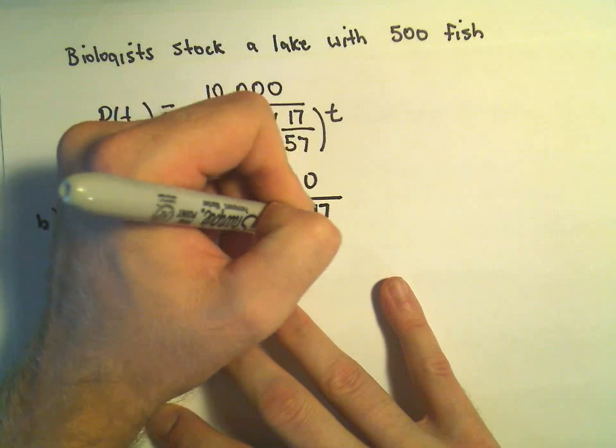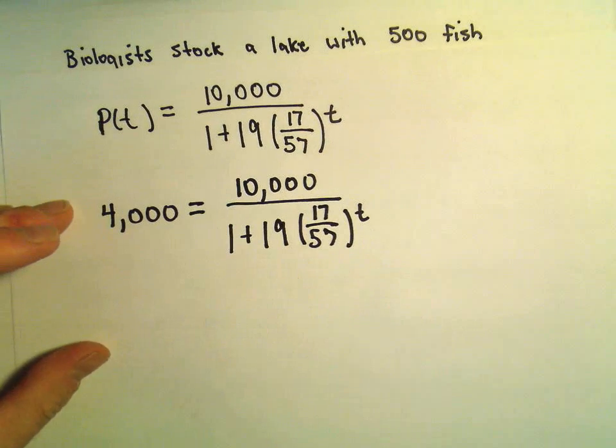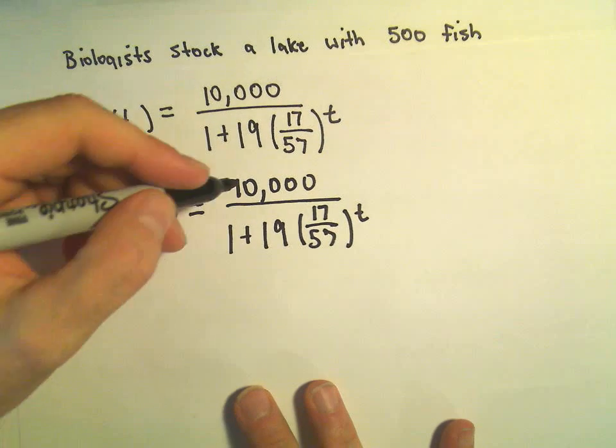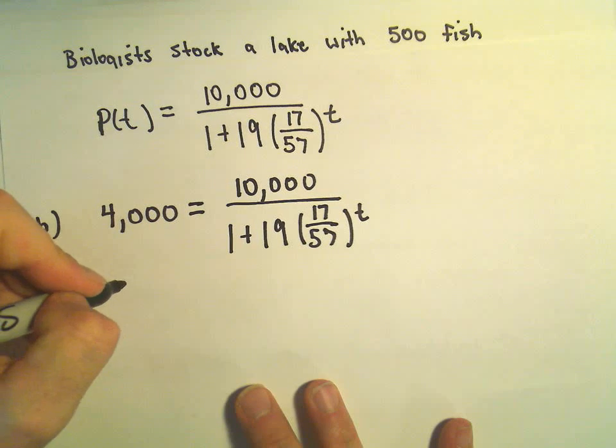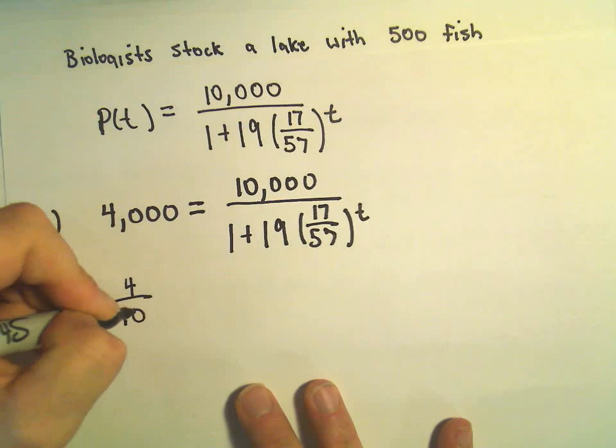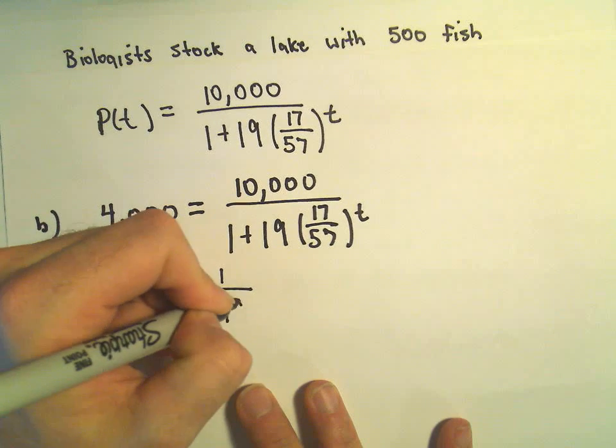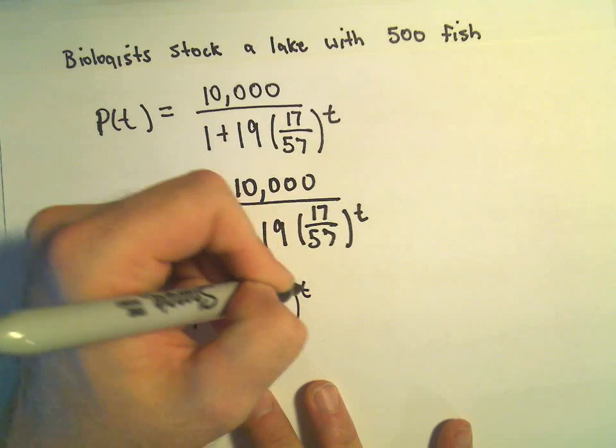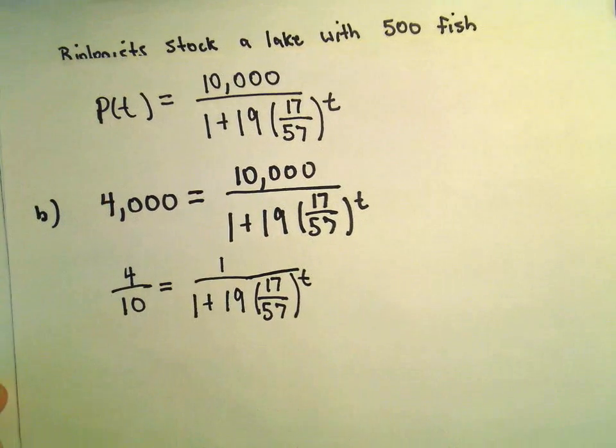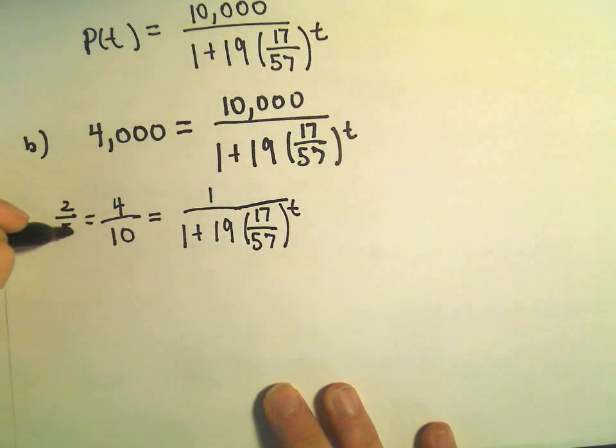So just a little bit of algebra at this point. I'm going to divide both sides by 10,000. So 4,000 over 10,000 will give us 4 tenths. And then we have 1 over 1 plus 19, 17 over 57 raised to the t power. Let's see, 4 tenths, that's really 2 fifths. We can even reduce that a little further.